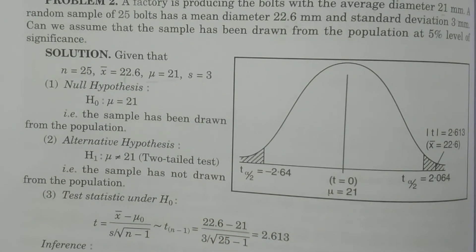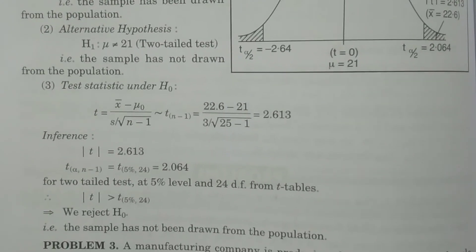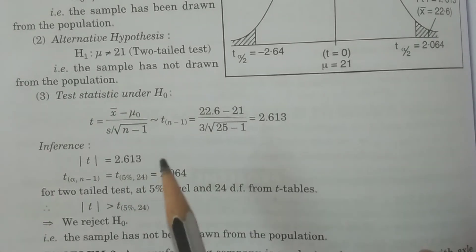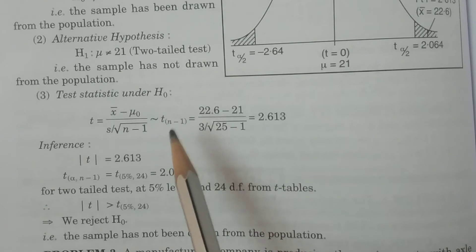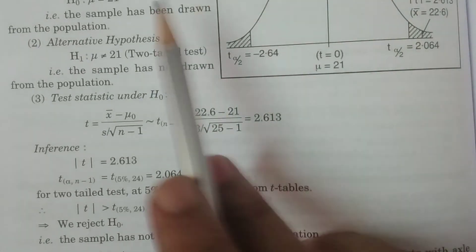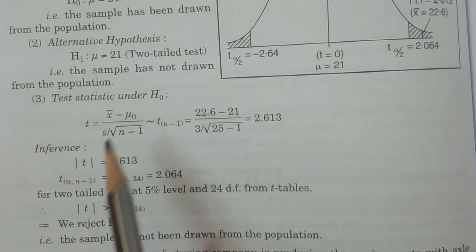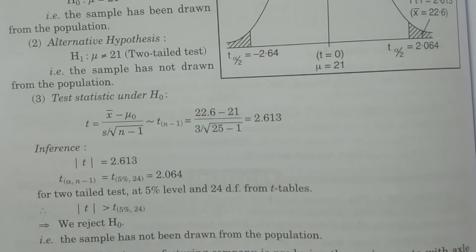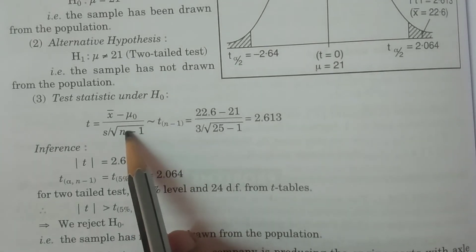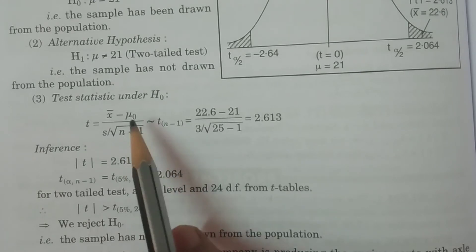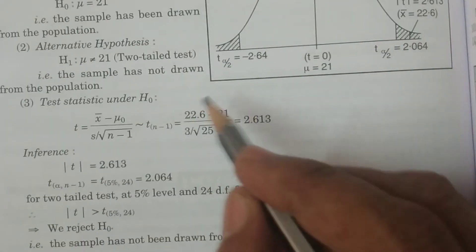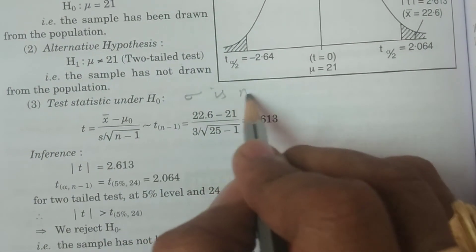Third, test statistic under H0. You have to identify whether it is a small sample or large sample. n is equal to 25, hence it is a small sample, so we use the t-distribution to test the means. Now, sigma known or not known — there are two cases. Sigma is not given here, so sigma is not known. We specify clearly: sigma is not given.